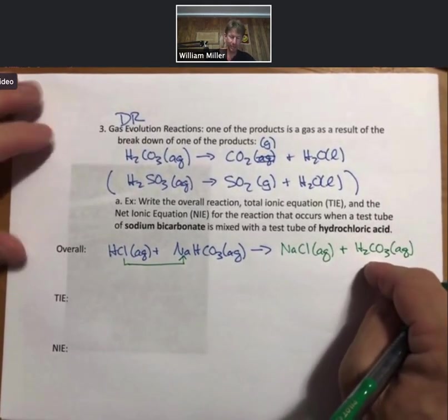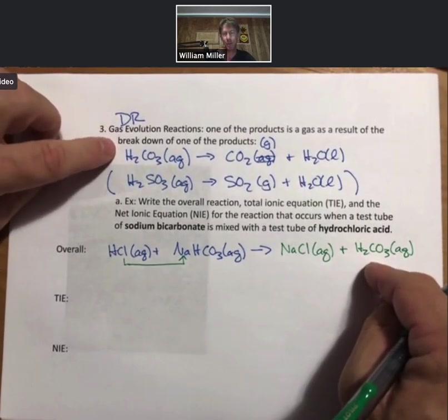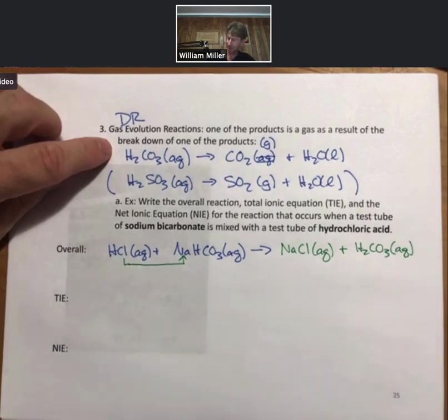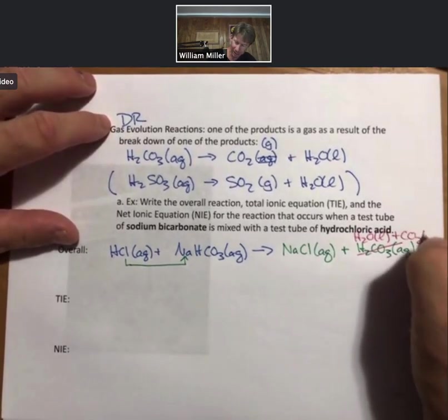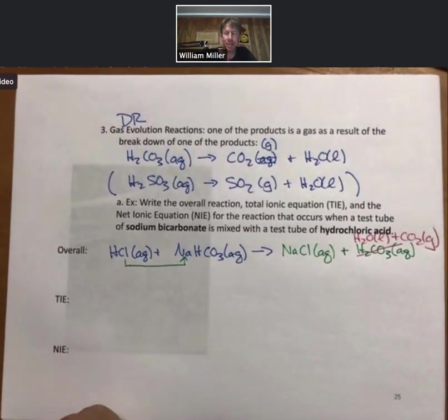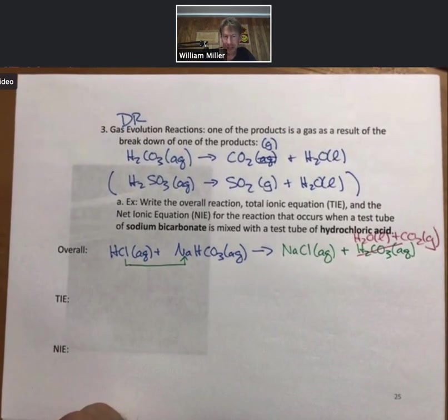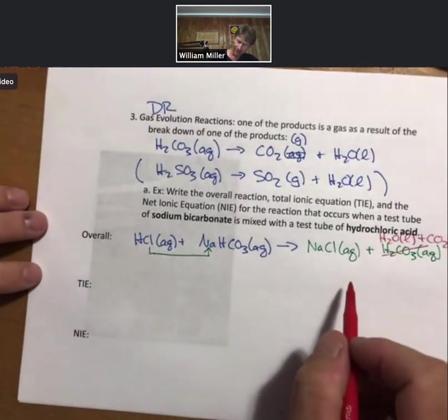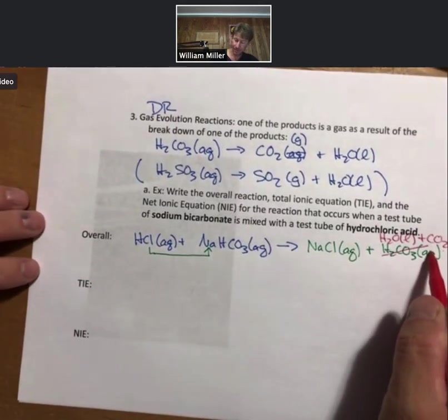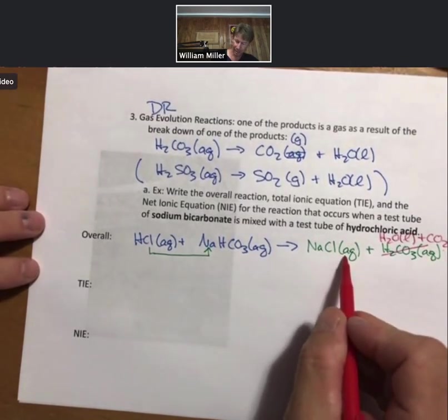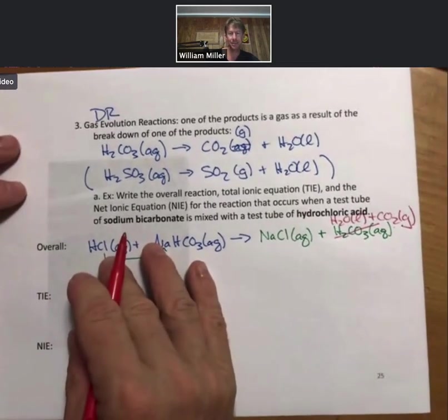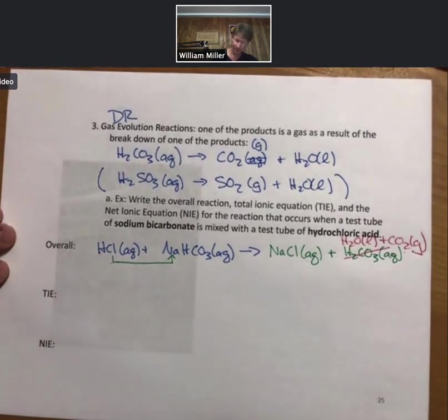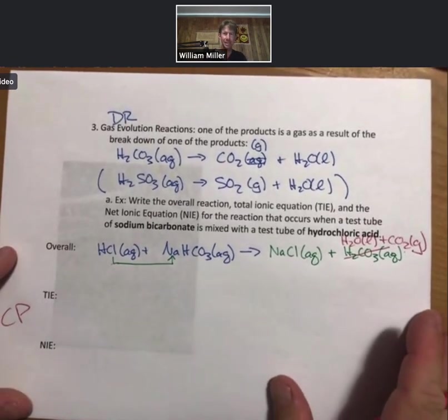Ding, we remember because we just talked about it, but we will remember because we will do it as well, that this has to be replaced. And I'm going to write them the other way, I don't know why. By H2O plus carbon dioxide, CO2. Now we can do our TIE and our NIE. We have a liquid and a gas, they're going to stay together. We're going to have aqueous, aqueous, aqueous, all three of these are going to break up into ions.